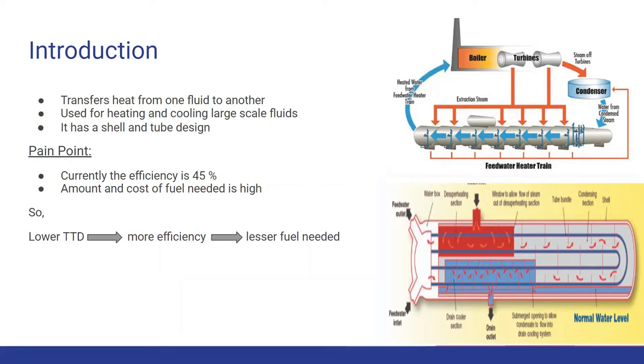The main problem that companies face today is the efficiency. Currently, the efficiency of heat exchangers is only 45% and the amount and cost of fuel needed is very high, which automatically leads to an increase in the output product that is obtained. So, if somehow we manage to increase the efficiency by lowering the TTD, we will need lesser fuel for consumption and as a result, the entire cost of the material will decrease.